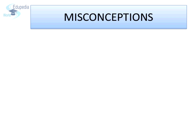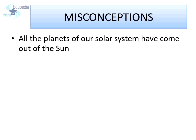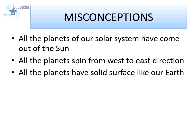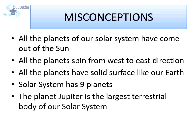Before we begin our exploration about the members of our solar system, let us look at some common misconceptions. Many people believe that all the planets have come out of the Sun. Many believe all planets spin from west to east just like Earth. Many believe all planets have a solid surface. Some believe the solar system has nine planets. Many believe Jupiter is the largest terrestrial body. All these are myths — during this session, you will understand what the real facts are.